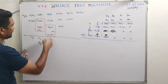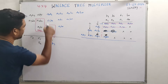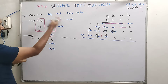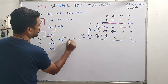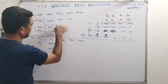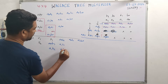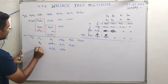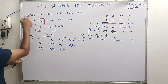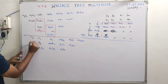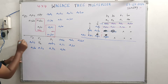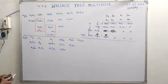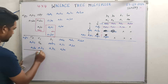These partial products are brought down as-is: A0·B3 comes down, A1·B2, A0·B2, A0·B1, A0·B0, A1·B1, A2·B0, A1·B0. Also A1·B3 and C2 come down. A2·B3, A3·B2, and A3·B3 also come down as-is. There are 3 bits in this column.